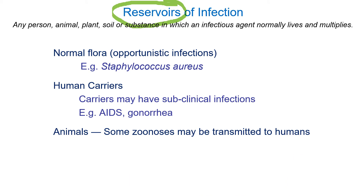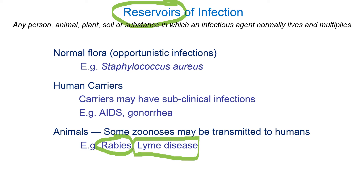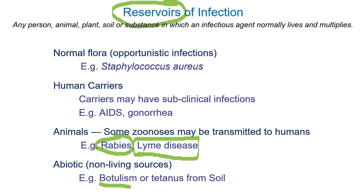Besides humans, we can get many infections from animals — these are zoonotic diseases. Rabies is an obvious example transmitted through an animal bite. Lyme disease is transmitted by a tick, with the white-footed mouse as the reservoir. West Nile disease has a reservoir in birds like robins and crows and spreads to humans via mosquito. There are also abiotic reservoirs — usually soil and water. Botulism and tetanus are caused by Clostridium species that form endospores living in soil; these can contaminate food and cause serious disease.